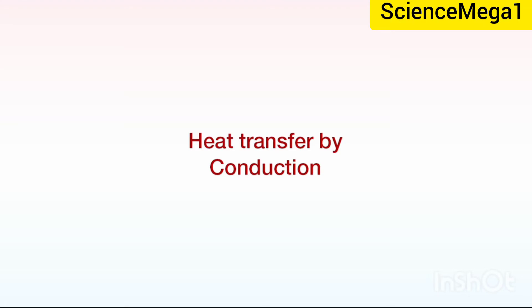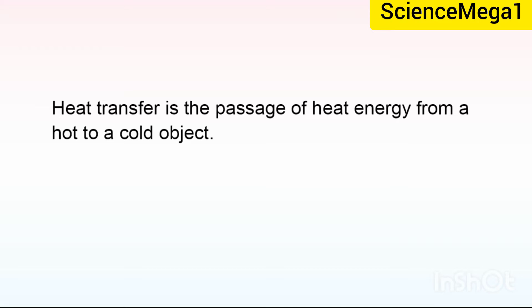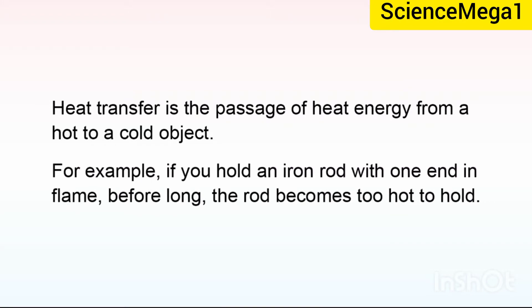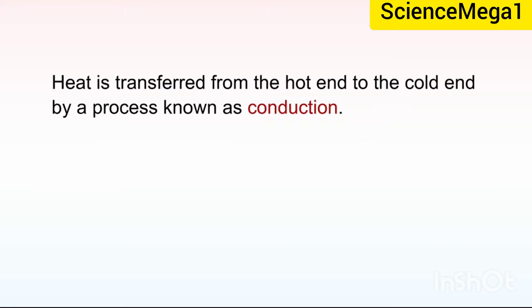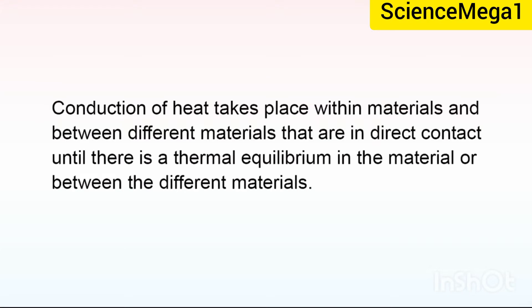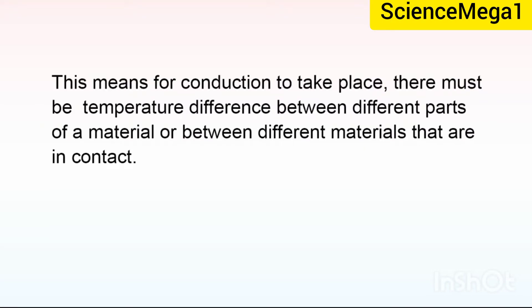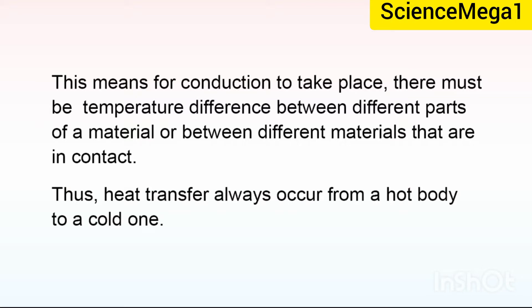Let's start with heat transfer by conduction. Heat transfer is the passage of heat energy from a hot to a cold object. For example, if you hold an iron rod with one end in flame, before long, the rod becomes too hot to hold. Heat is transferred from the hot end to the cold end by a process known as conduction. Conduction of heat takes place within materials and between different materials that are in direct contact until there is thermal equilibrium in material or between the different materials. This means for conduction to take place, there must be temperature difference between different parts of a material or between different materials that are in contact.